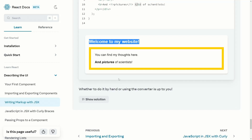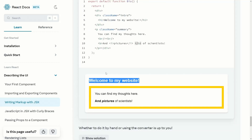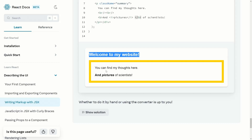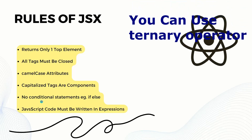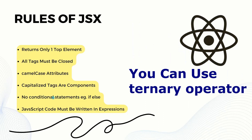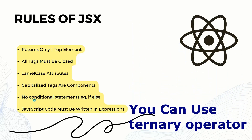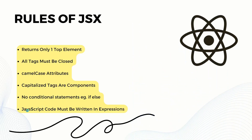That completes the JSX challenge. To summarize the JSX rules: first, return only one top element; second, all tags must be closed; third, use camelCase attributes; fourth, capitalized tags are components. There is also a fourth rule: no conditional statements like if-else or for loops directly inside JSX — those are not supported inside JSX.